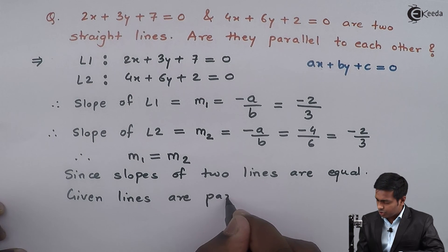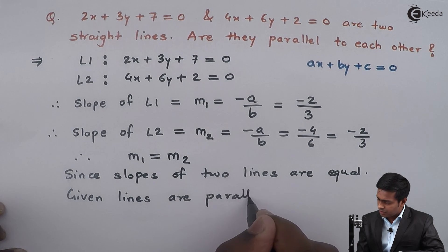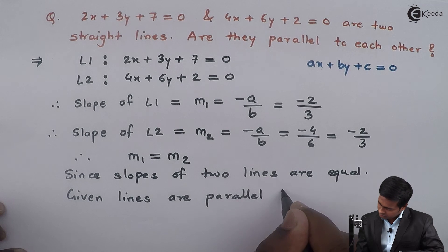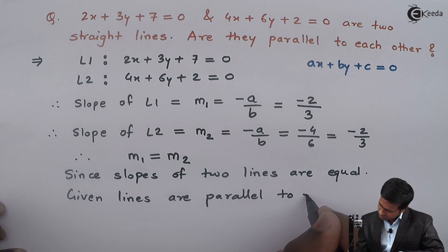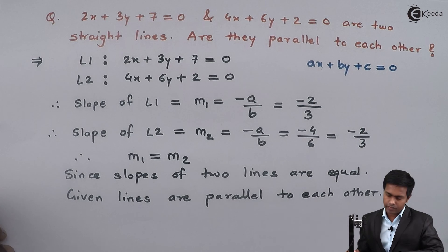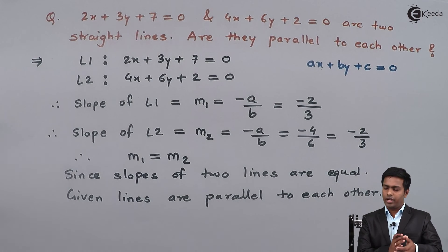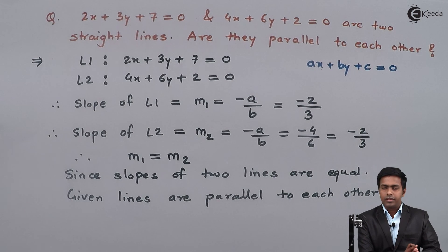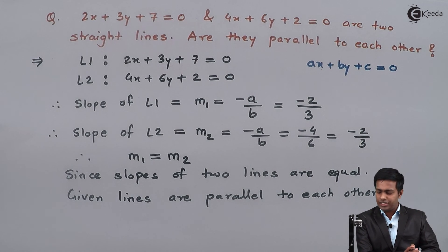Since the slopes of the two lines are equal, the two lines are parallel to each other. Thank you.